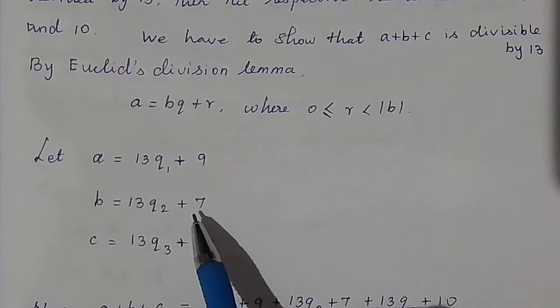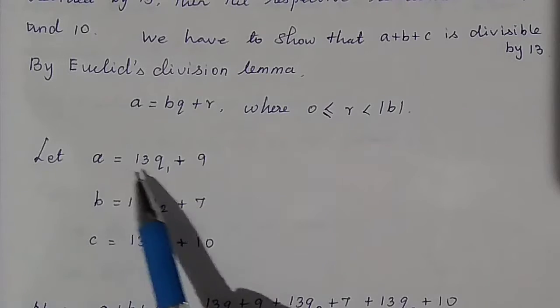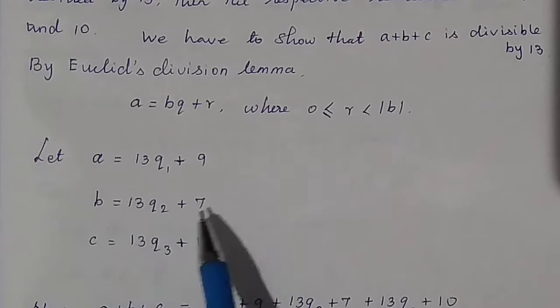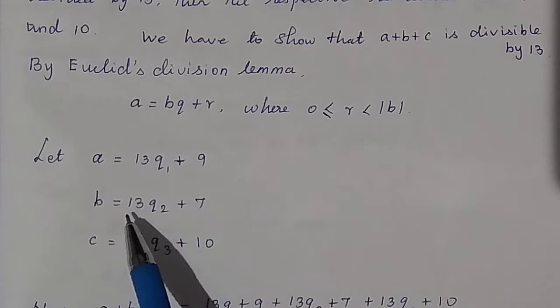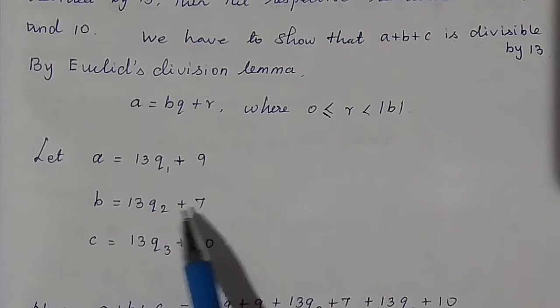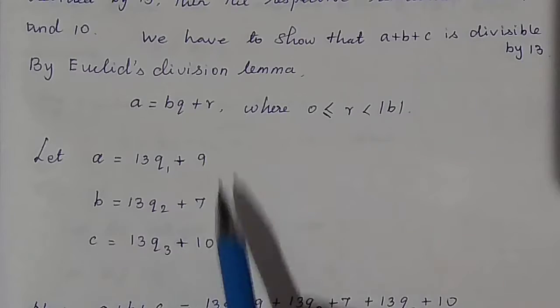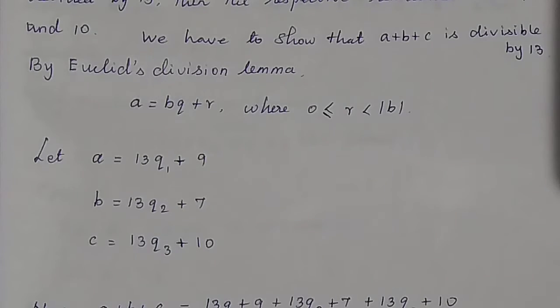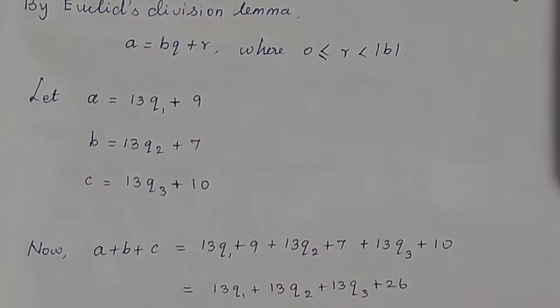C equals 13q3 plus 10. So in general form: a is 13q1 plus 9, b is 13q2 plus 7, c is 13q3 plus 10. For these three numbers, we need to show that a plus b plus c is divisible by 13.